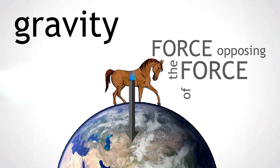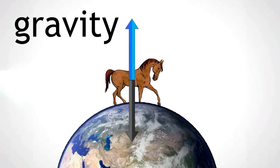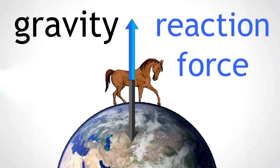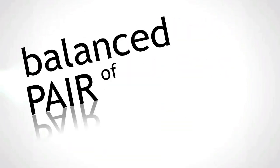An arrow is drawn in the opposite direction but equal in size. This force is called the reaction force. As the reaction force is the same size but acts in the opposite direction to the horse's weight, these two forces are a balanced pair of forces.